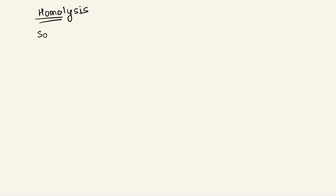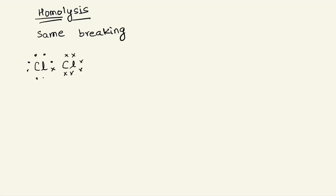This video is going to lead us to another video on the types of intermediates, but for now let's get started with homolytic and heterolytic bond fission. Homolysis: 'homo' means same, 'lysis' means breaking down. We know that covalent bonds are formed by sharing of electrons between the atoms which are involved.